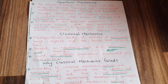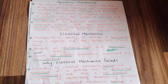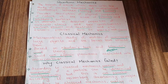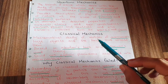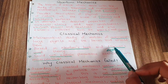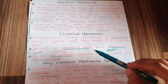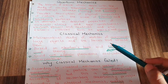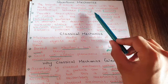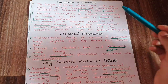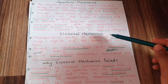Micro particles like electrons, protons, neutrons, atoms, and molecules deviate from the ideal behavior expected by Newton's laws. These deviations could not be explained using Newton's laws and Maxwell's wave theory — they can only be explained using quantum mechanics.